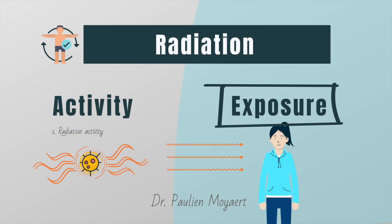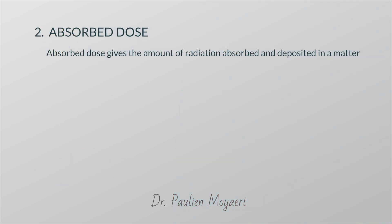Radiation exposure is expressed in several ways. In the next couple of minutes, we will talk about the absorbed dose, the equivalent dose, and the effective dose. The absorbed dose gives the amount of radiation absorbed in a matter, be it bone, fat, muscle, or concrete, irrespective of the effects this deposit has on the material.